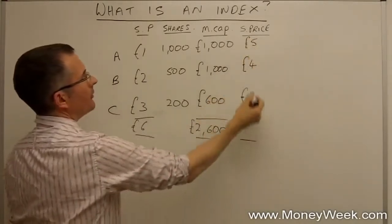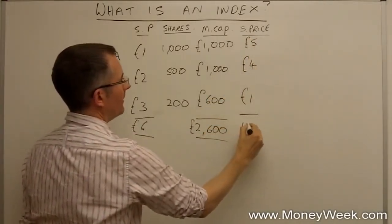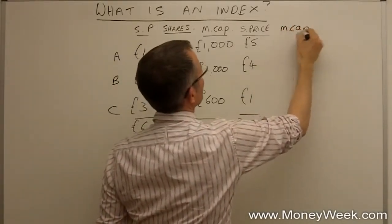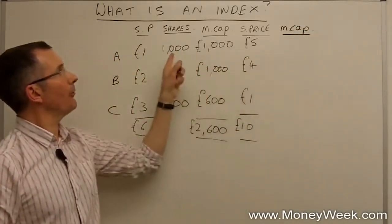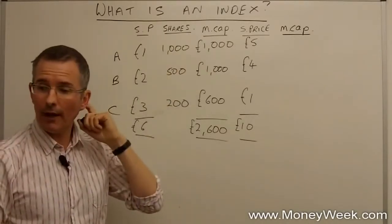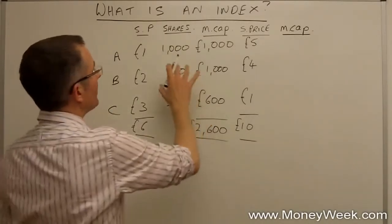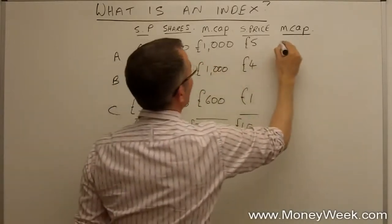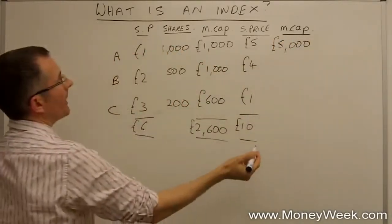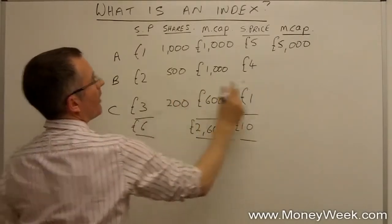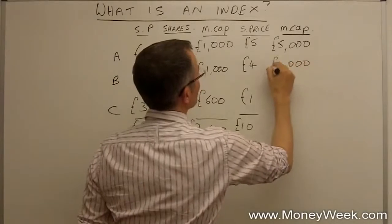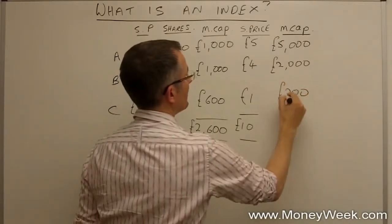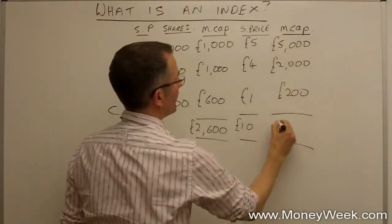Now, the revised share prices just added up, £5, £9, £10. And the revised market capitalisations, I'm going to take the new share prices and multiply by the number of shares still in issue. Nothing much has changed there. Let's do that. £1,000 times 5, so new market capitalisation for company A, £5,000. New market capitalisation for company B, 4 times 500, so that's £2,000. And the new market capitalisation for company C, £200. Combine those, £7,200.